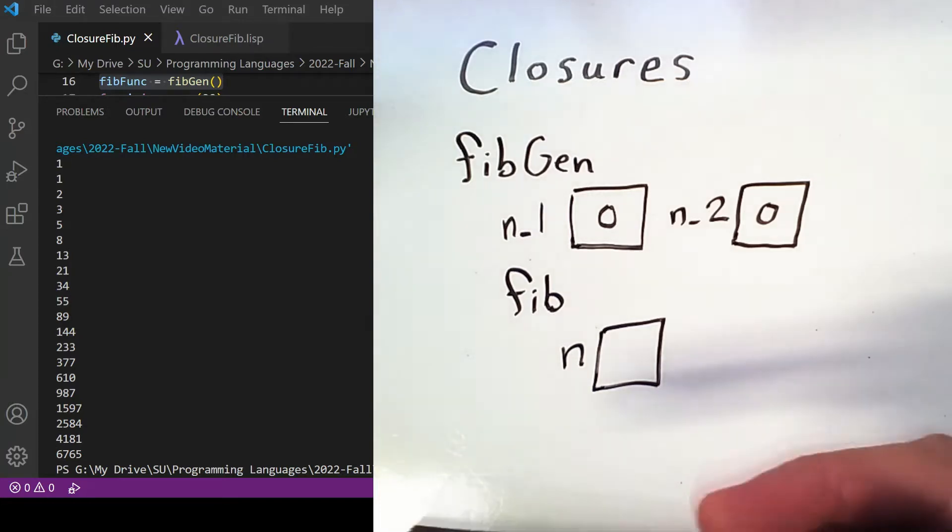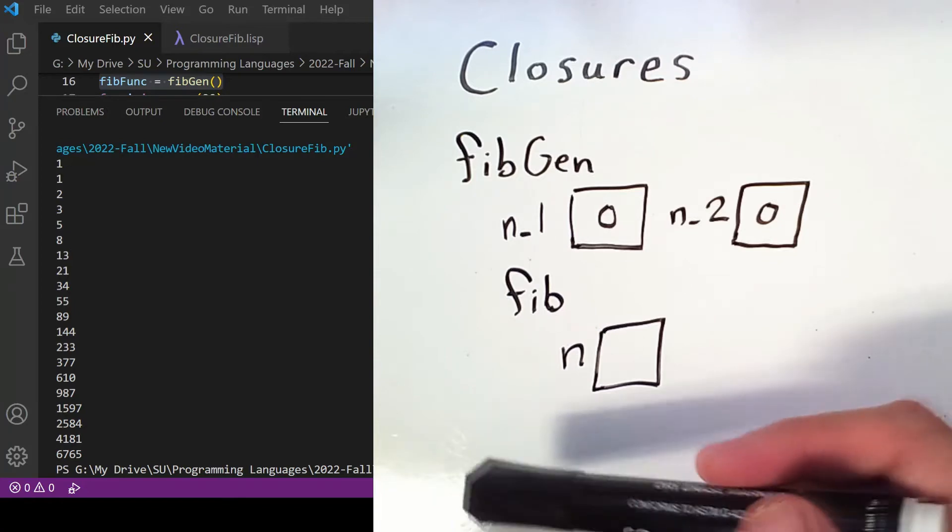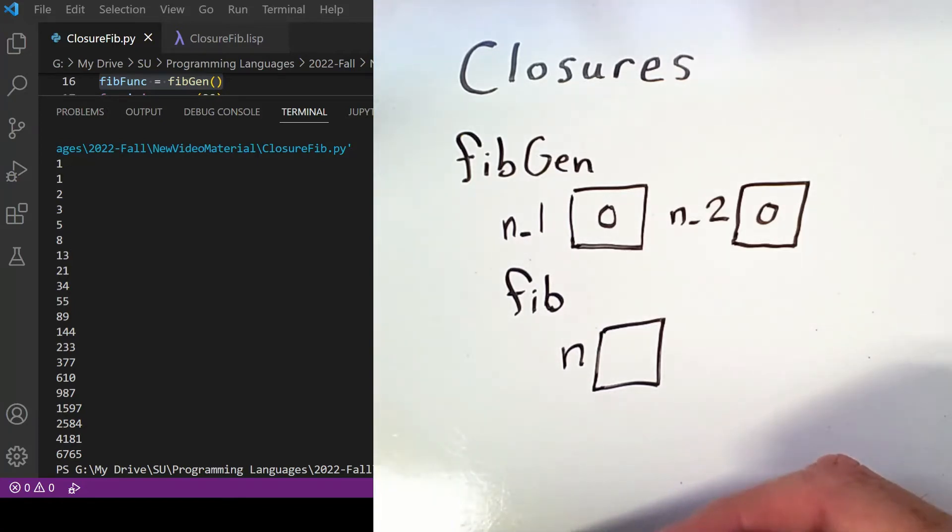As probably could have been guessed by the name, repeatedly calling fibfunc prints out a sequence of Fibonacci numbers—the sequence defined by adding the two previous numbers in the sequence over and over. However, we didn't actually send any parameters to this function; it simply updated some internal variables.